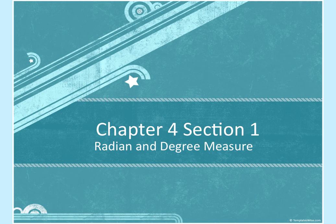Chapter four starts with radian and degree measurement — basically learning the difference and how to get from one to the other. There are things like coterminal angles and intercepted arc in this section.